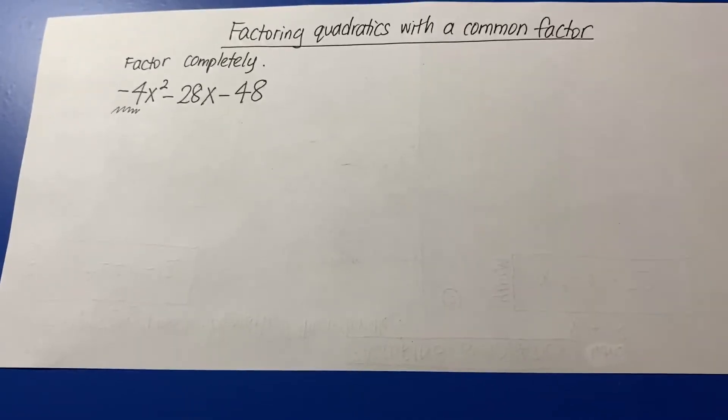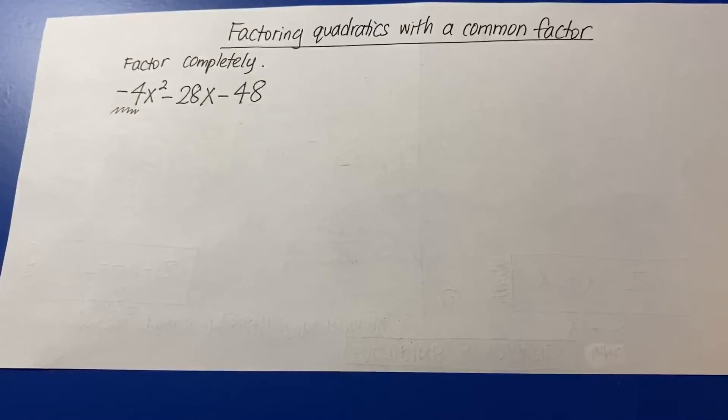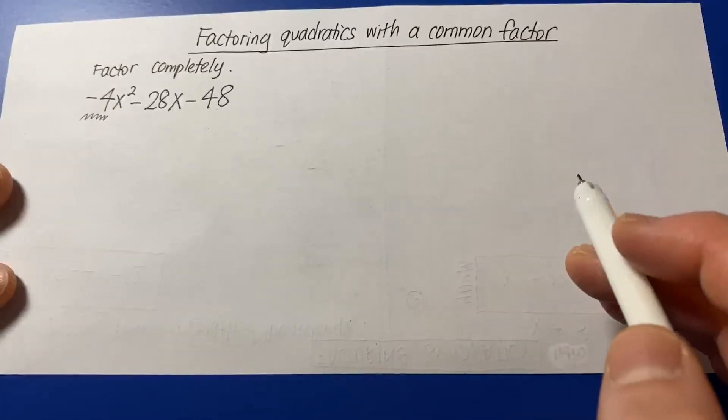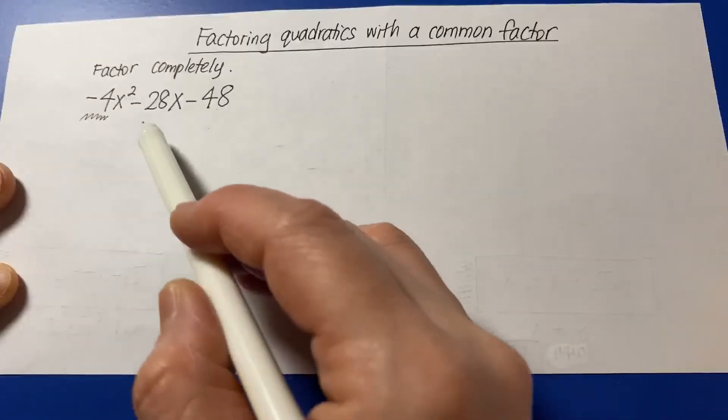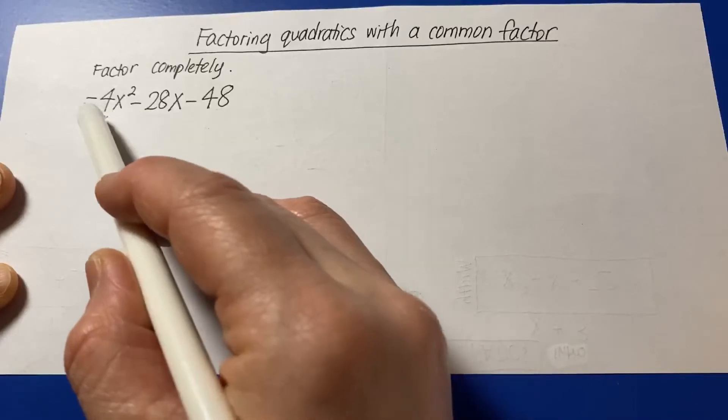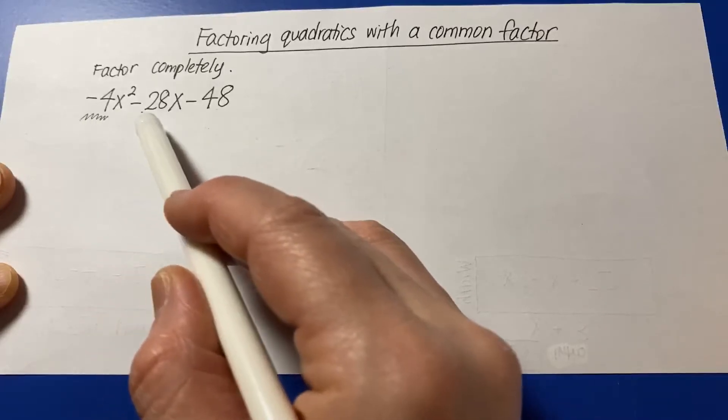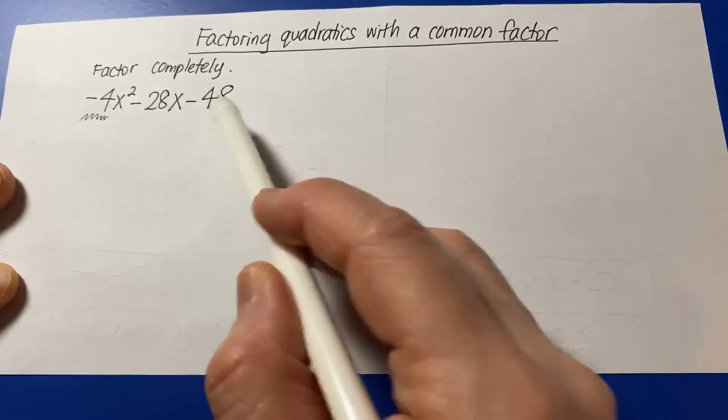Well, the next question you were supposed to ask yourself is, is this a difference of perfect squares? Well, this is a difference, this is a perfect square, but are these perfect squares? No.